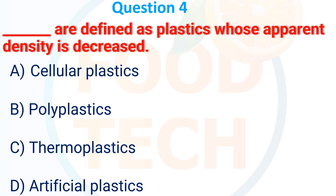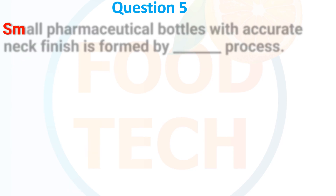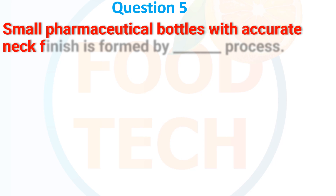Dash are the key defined as plastics whose apparent density is decreased. (a) Cellular plastics, (b) Poly plastics, (c) Thermo plastics, (d) Artificial plastics. The answer is (a) Cellular plastics.